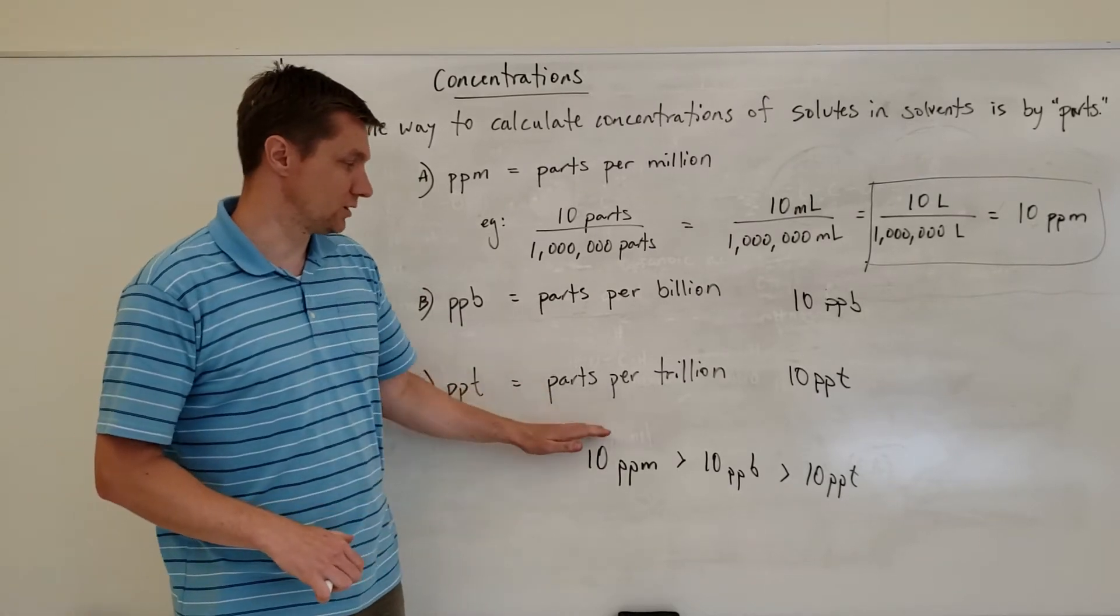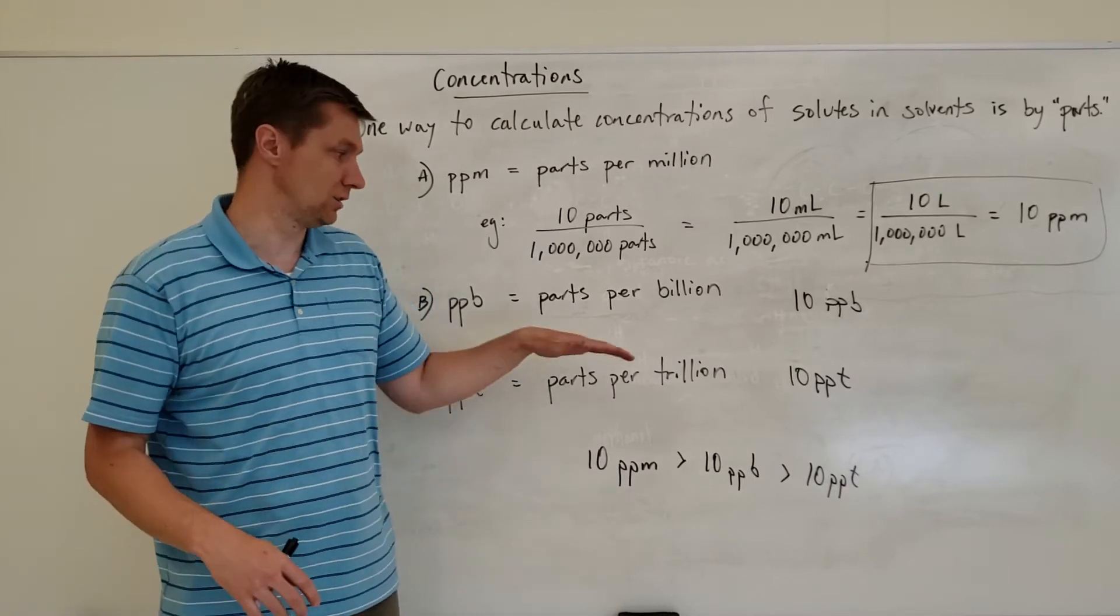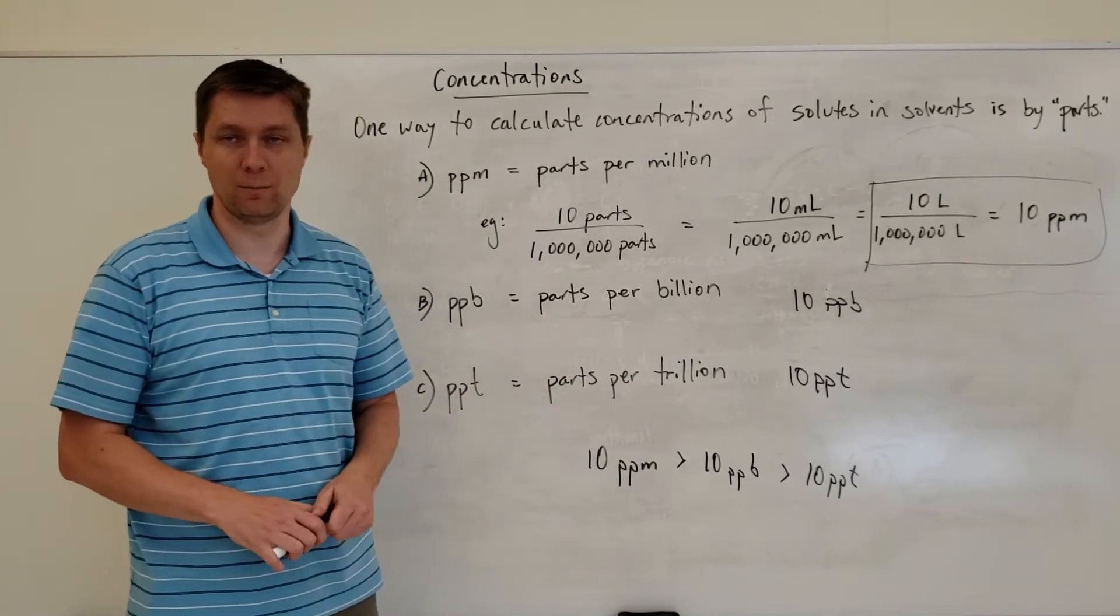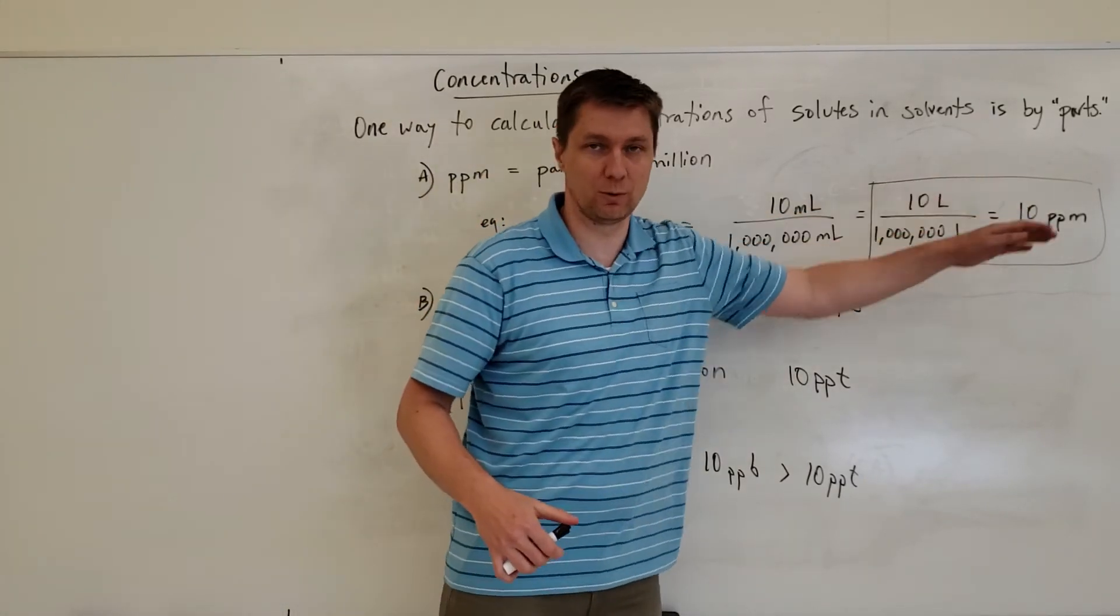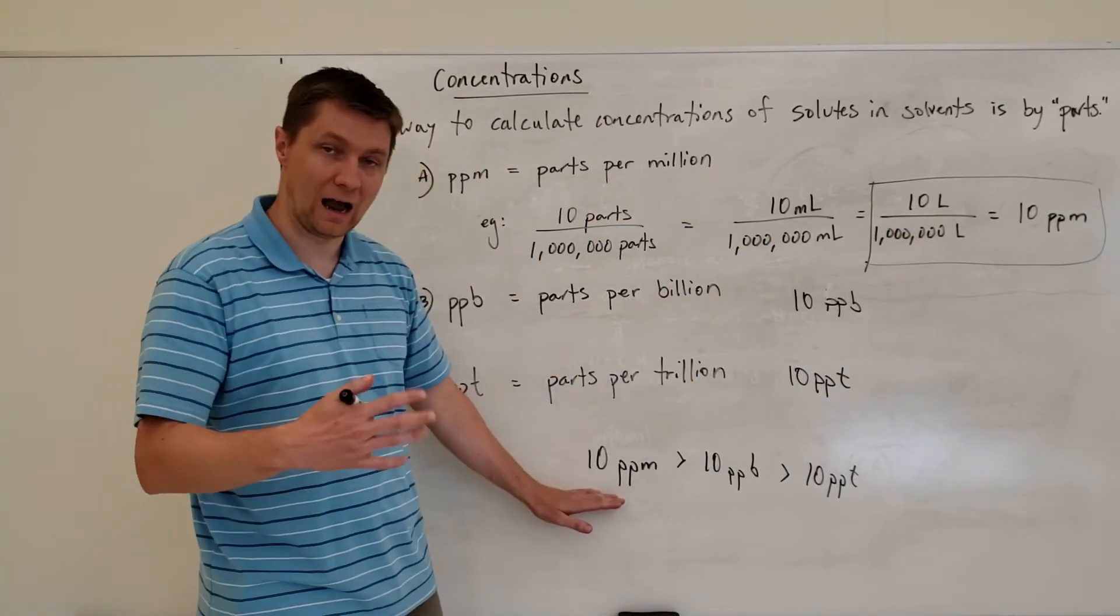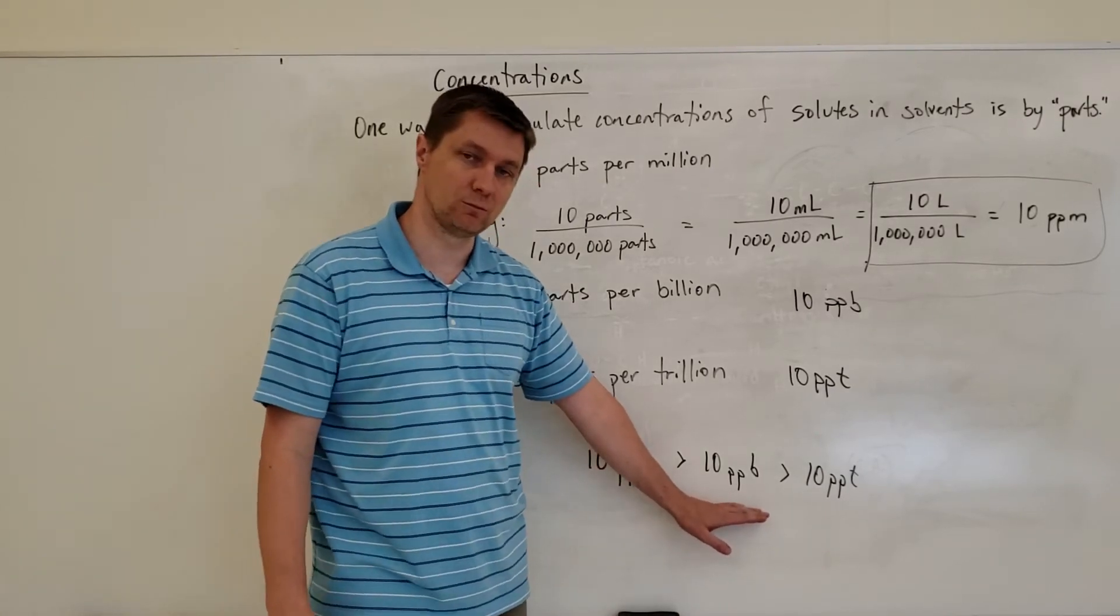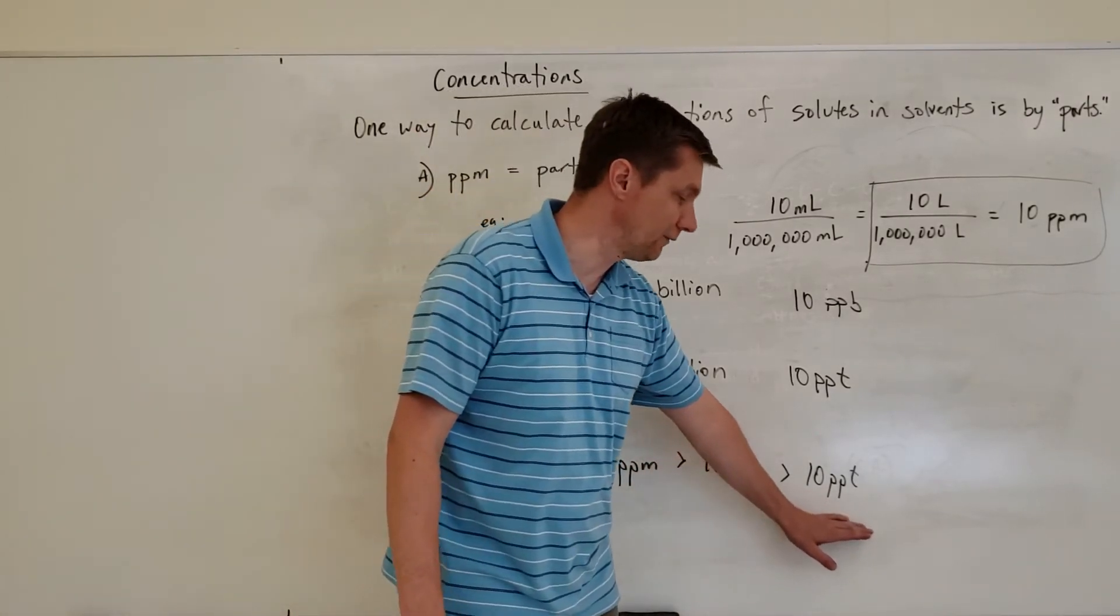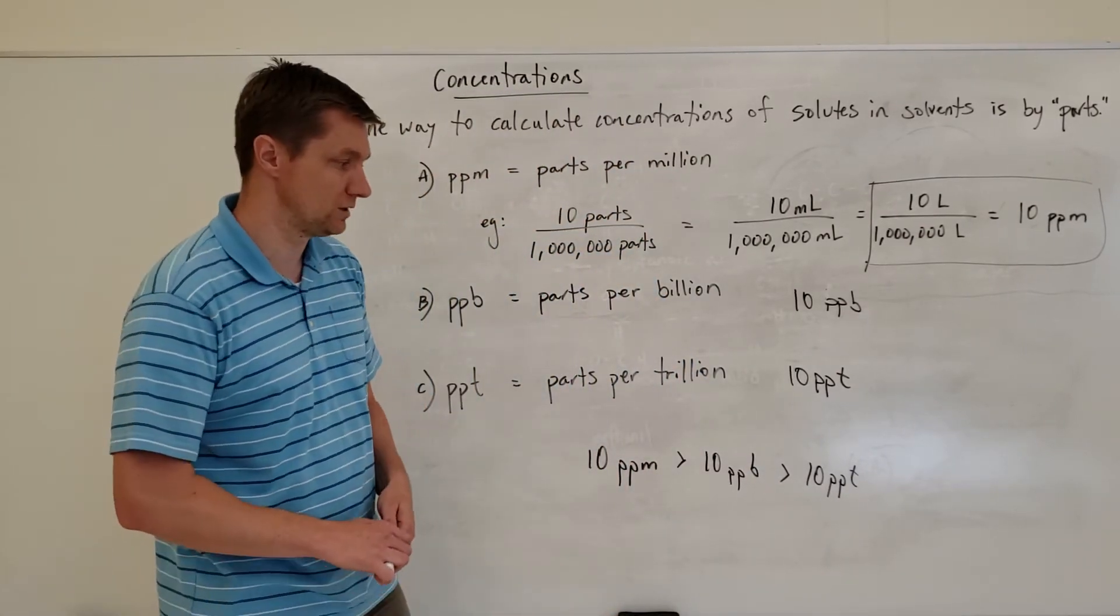So then moving on to parts per trillion, again that would be even a less concentrated solution than something with parts per billion. Now that's assuming that all of these would be ten. Ten parts per million is going to be the most highly concentrated. Then the next most concentrated would be ten parts per billion and then the lowest concentrated solution would be the ten parts per trillion.